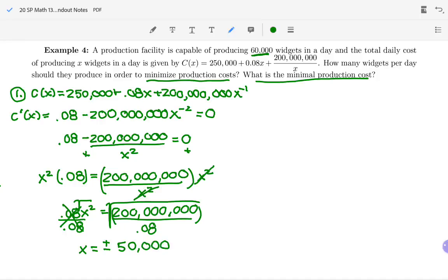Is that on our interval of interest? Well, the next step is to test all critical numbers on our interval. So clearly the least amount of widgets you can make in a day is zero. Can't make any less than that. The most they're capable of producing is 60,000. And now we have two critical numbers. We have positive 50,000 and we have negative 50,000.